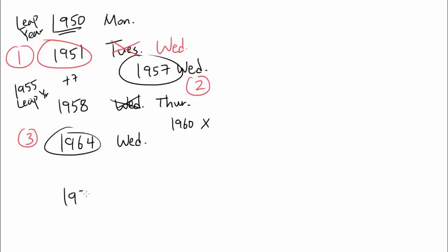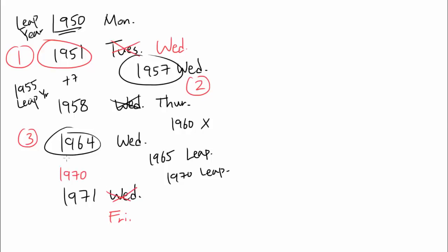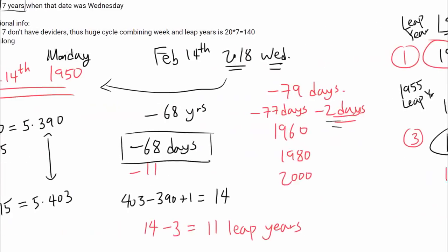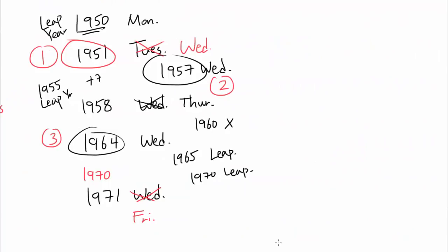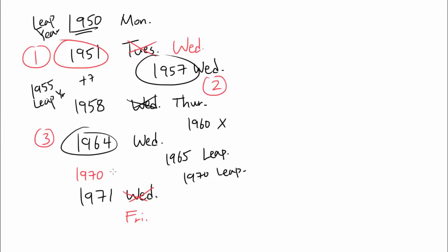Adding 7 to 1964, you'd expect 1971 to be Wednesday. But 1965 is a leap year and 1970 is also a leap year, so instead of Wednesday, 1971 is actually Friday. Since 1970 is itself a leap year, the extra February 32nd day pushes things so that 1970 turns out to be Wednesday. So 1970 is Wednesday — that's four.